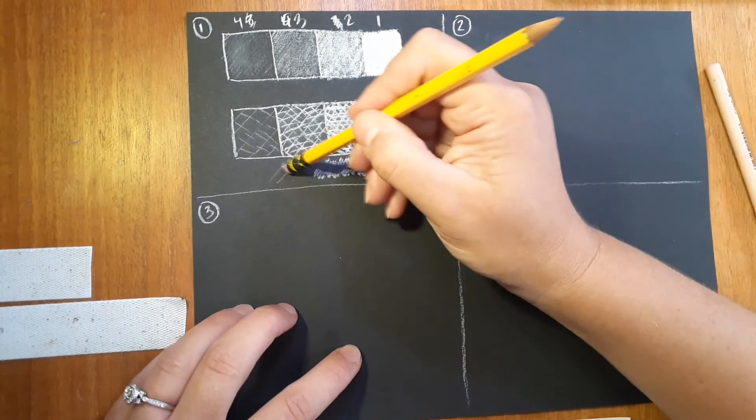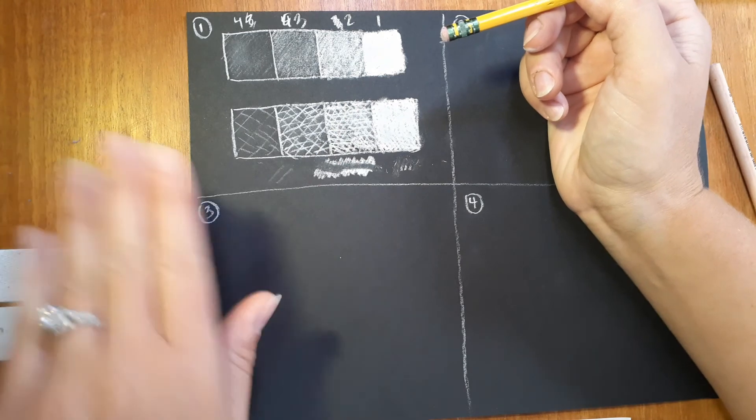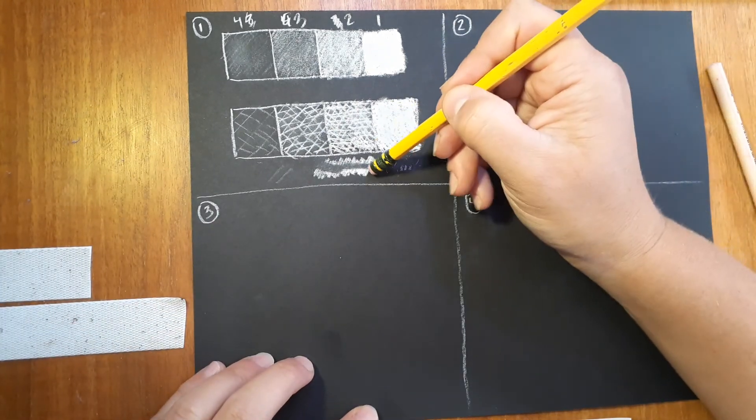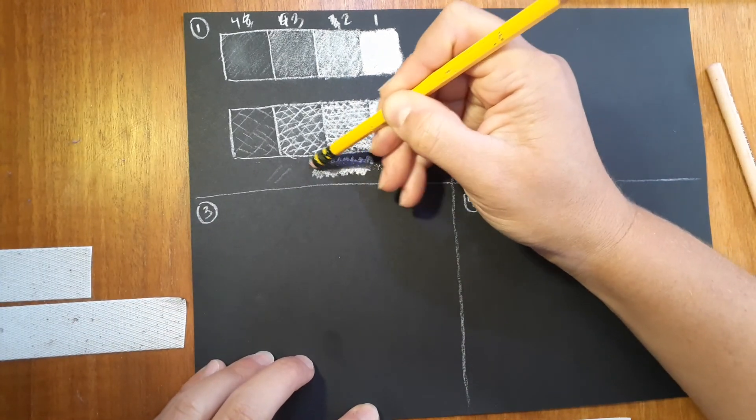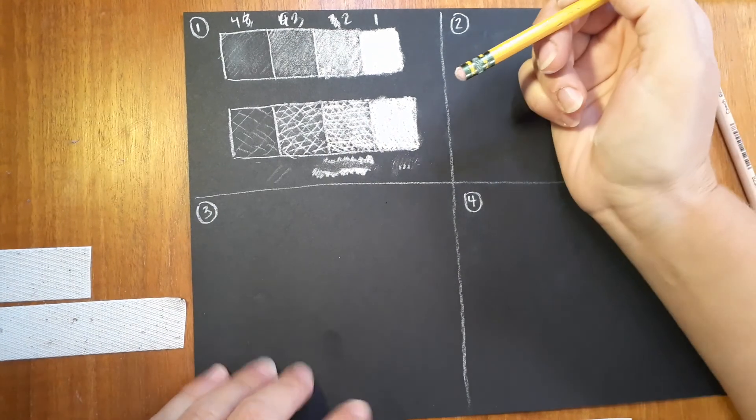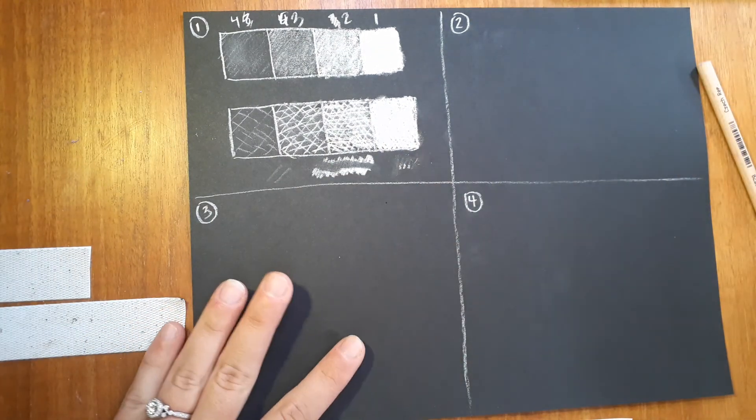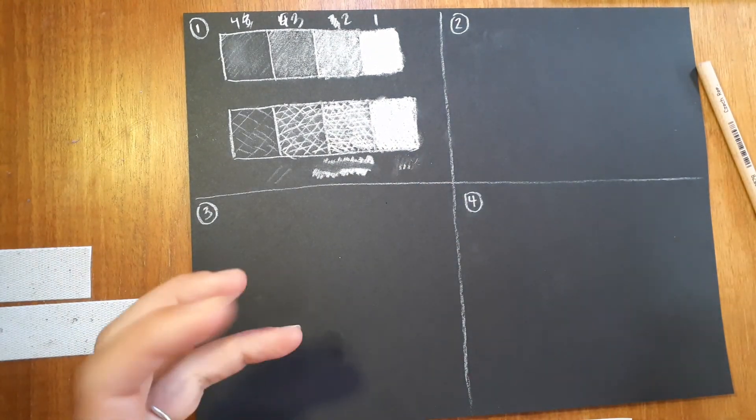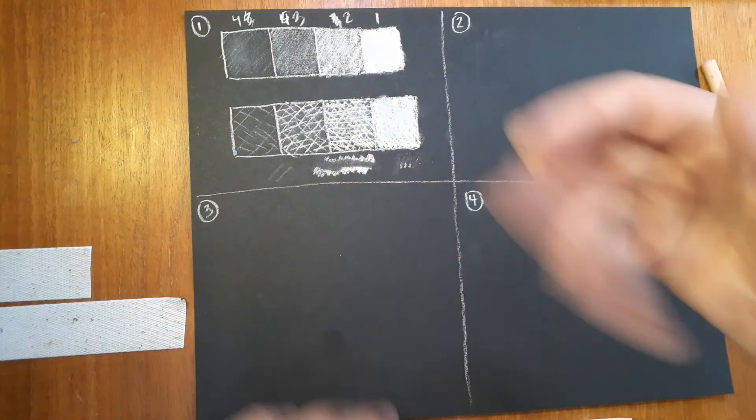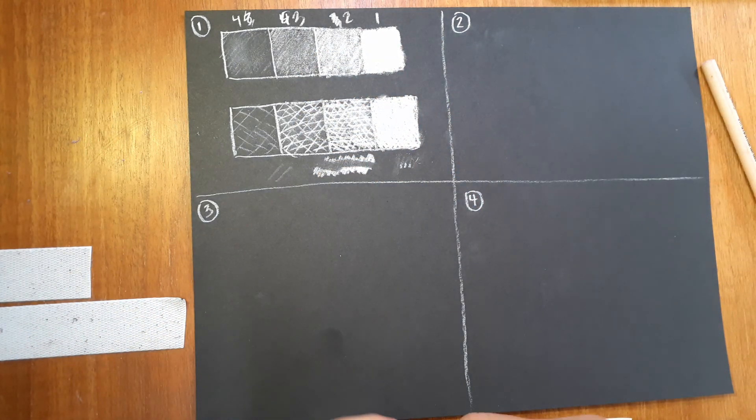So again, the goal today is just exploring with this charcoal pencil and with the eraser, into how we kind of can create these values and create some form as well.